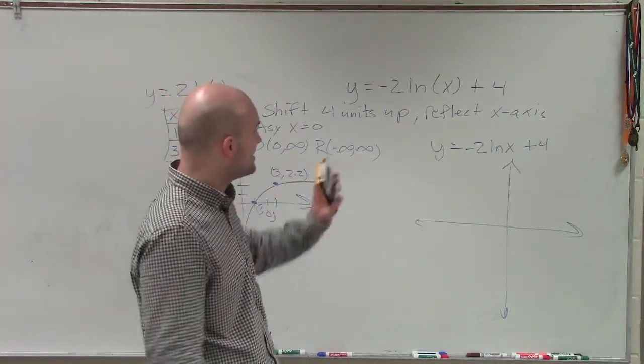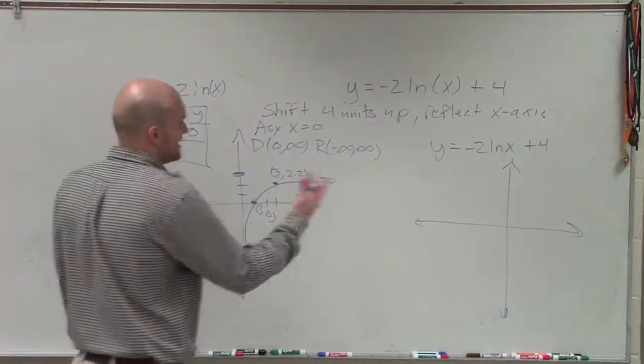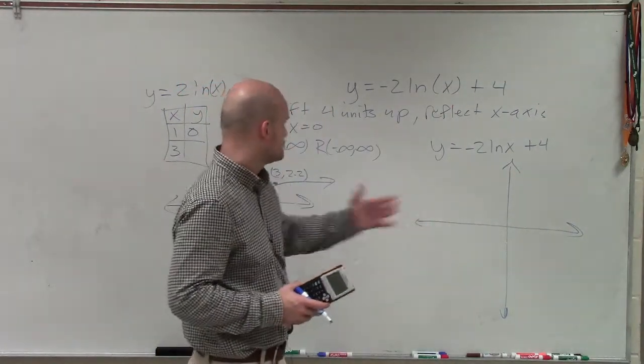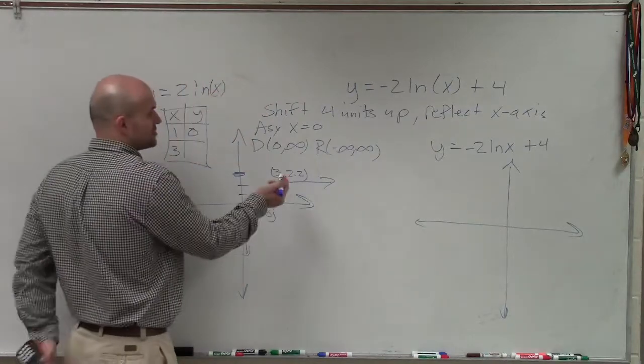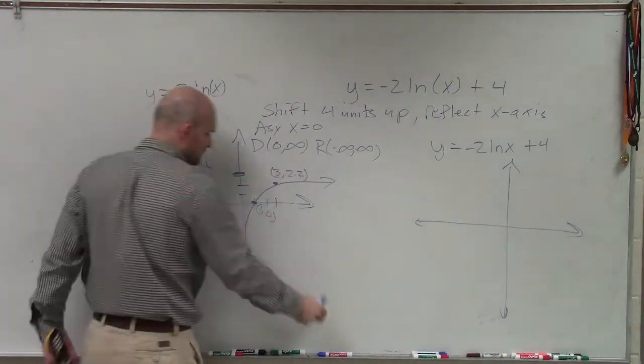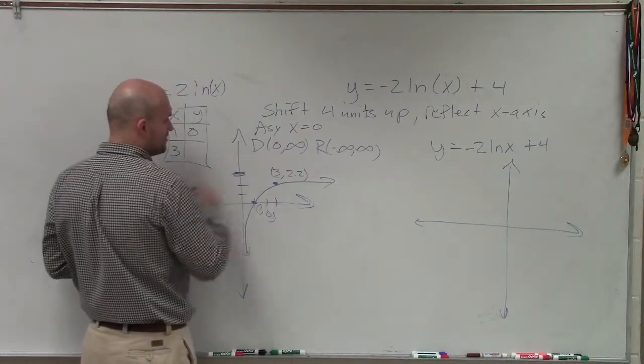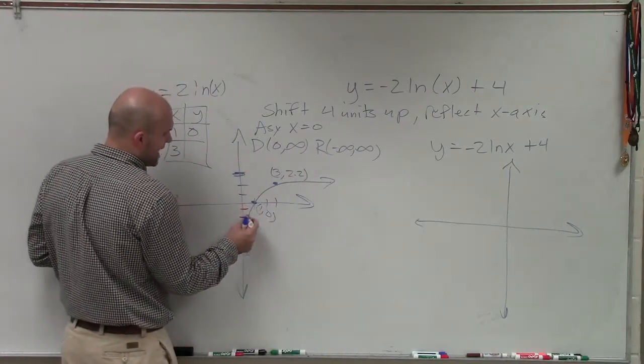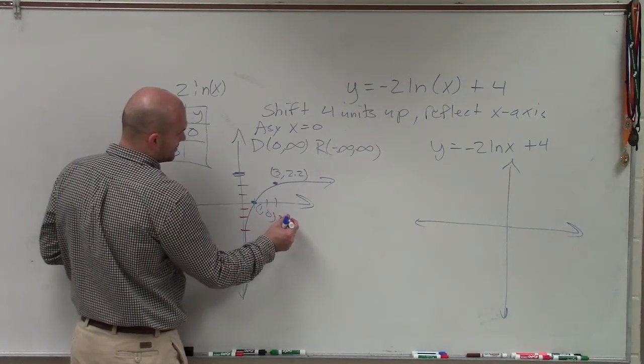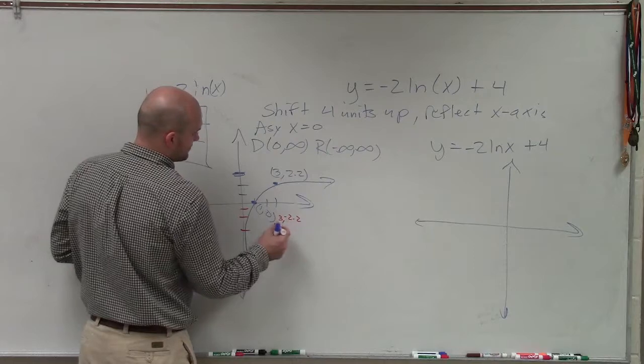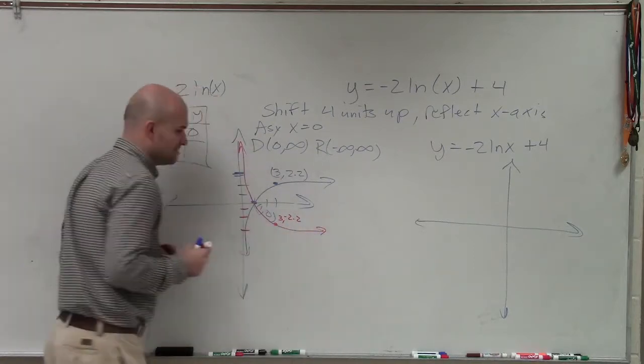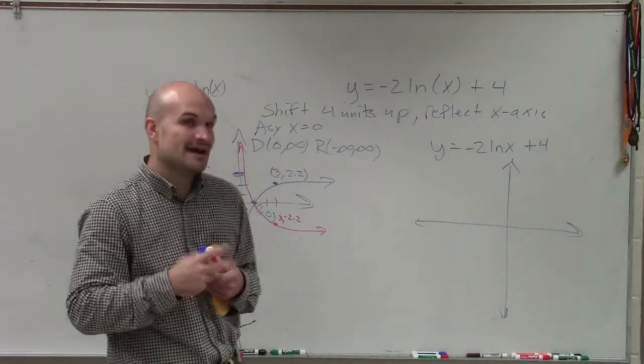So now we need to apply these transformations. It tells us to reflect over the x-axis and then to shift the graph up 4. When we're applying this reflection, this graph is going to be reflected about the x-axis. So instead of going over 3 up 2, I'm going to go over 3 down to negative 2. So it'd be 3, comma, negative 2.2. Now this point's going to remain the same, because when you reflect it over the x-axis, it's not going to be changed.